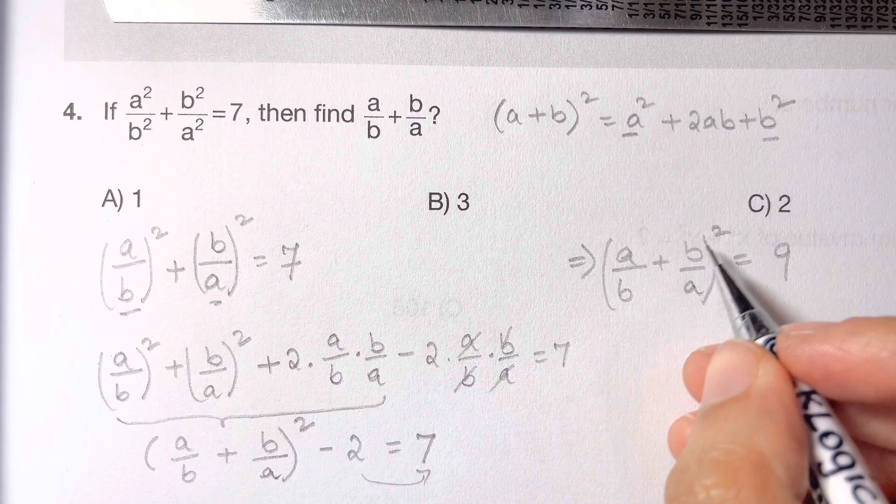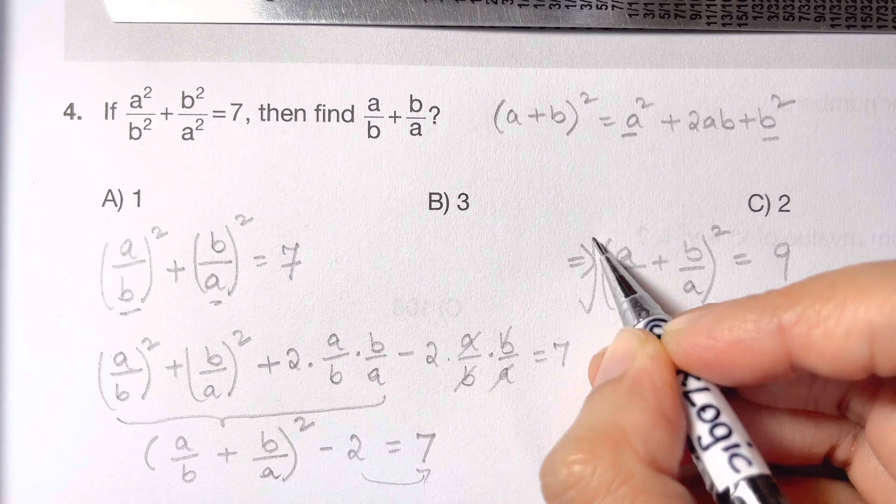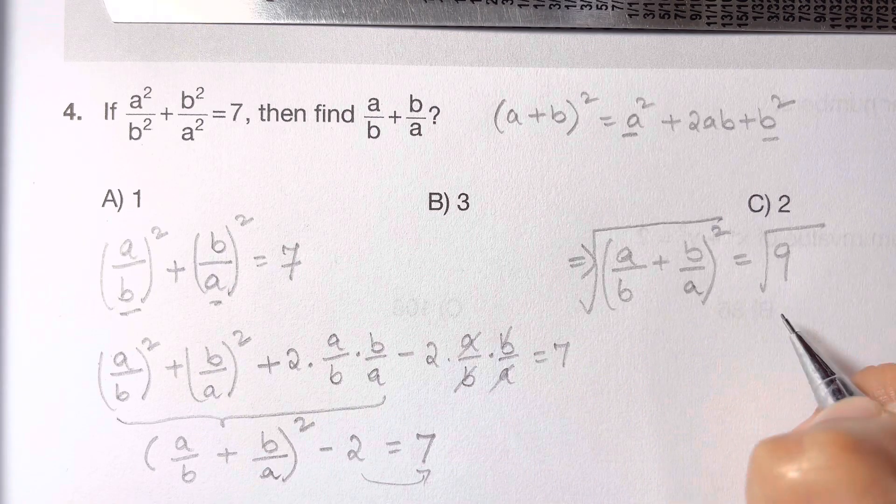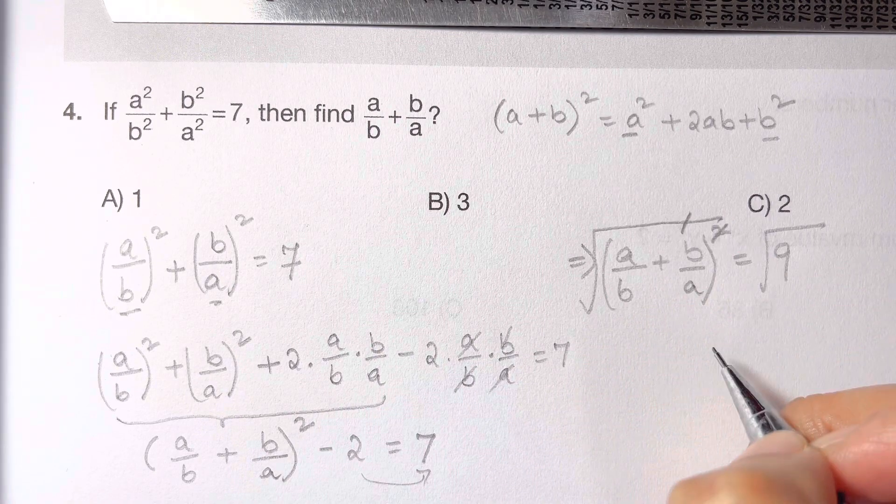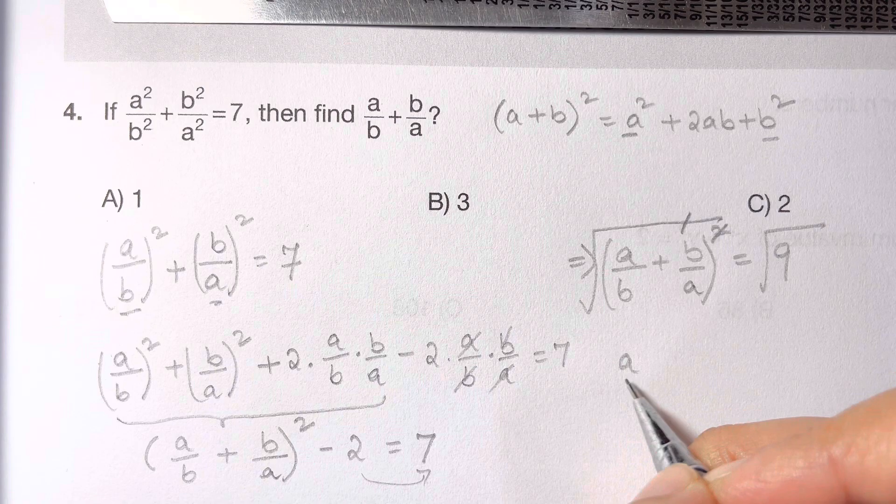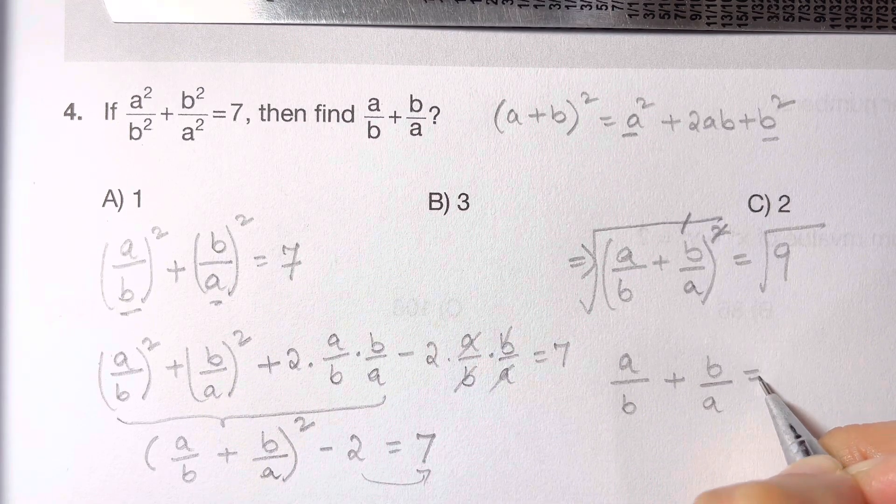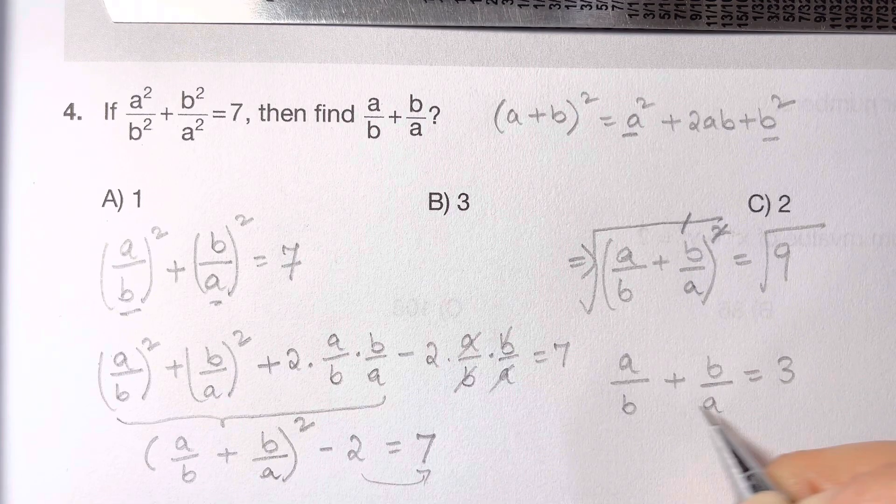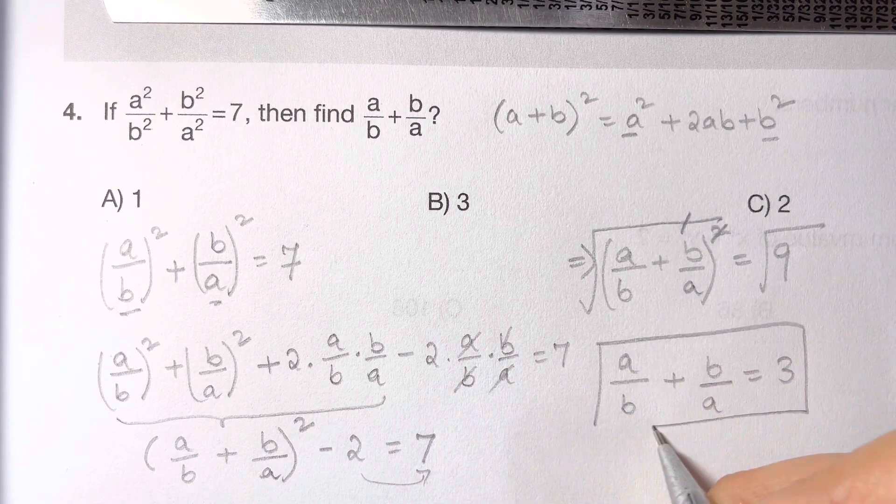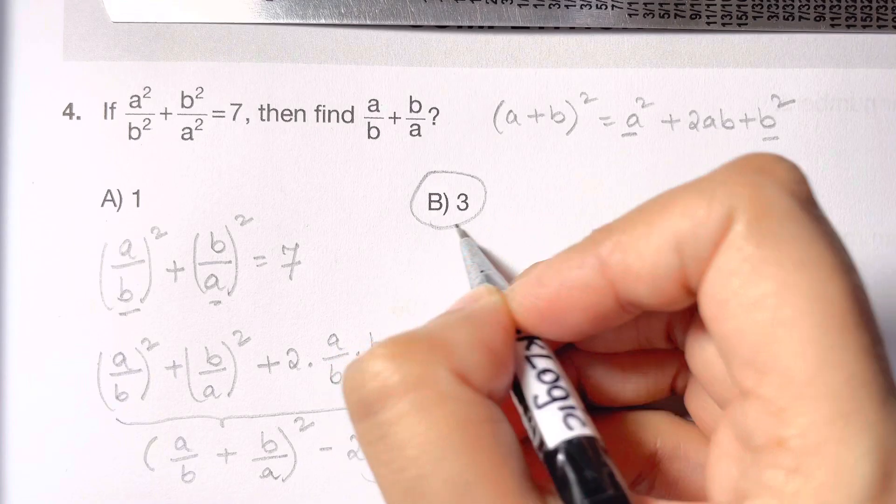And now square, so take square root on both sides. Square root and square get cancelled, so you're left with a over b plus b over a equals square root of 9, which is 3. So that's your answer choice, B.